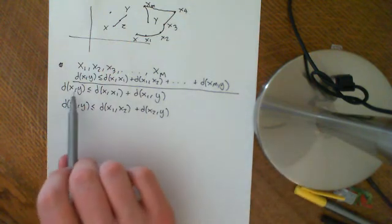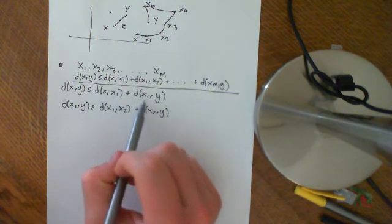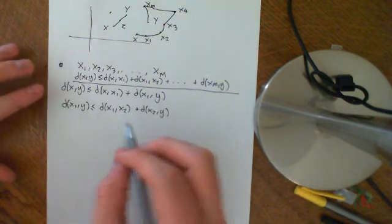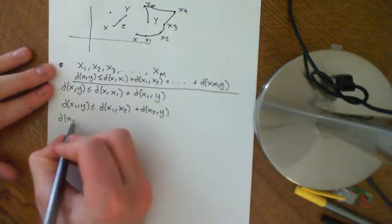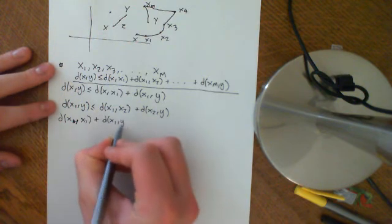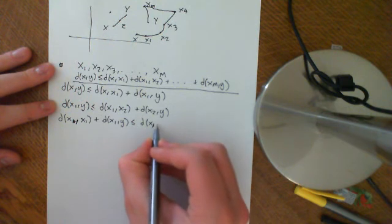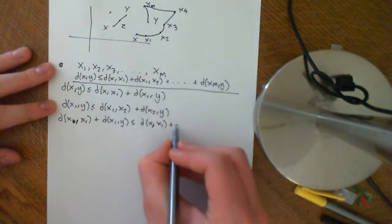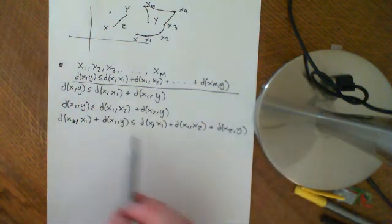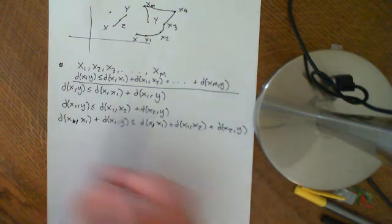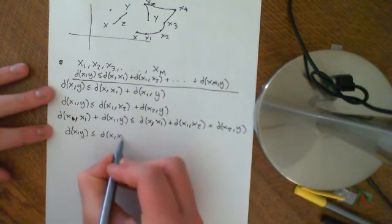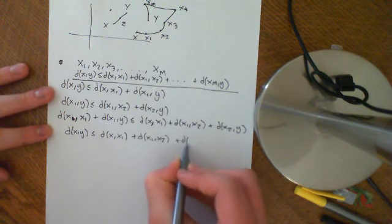The way you prove it is to start by saying the distance between x and y is less than or equal to the distance between x and x1 plus the distance between x1 and y. Then say the distance between x1 and y is less than or equal to the distance between x1 and x2 plus the distance between x2 and y. We then add the distance between x and x1 to both sides of that second inequality, giving us: distance(x, x1) plus distance(x1, y) is less than or equal to distance(x, x1) plus distance(x1, x2) plus distance(x2, y). Applying the transitive property of inequalities, this shows that distance(x, y) is less than or equal to distance(x, x1) plus distance(x1, x2) plus distance(x2, y).